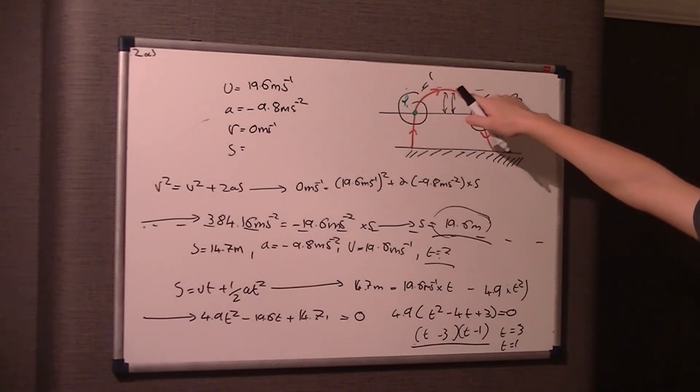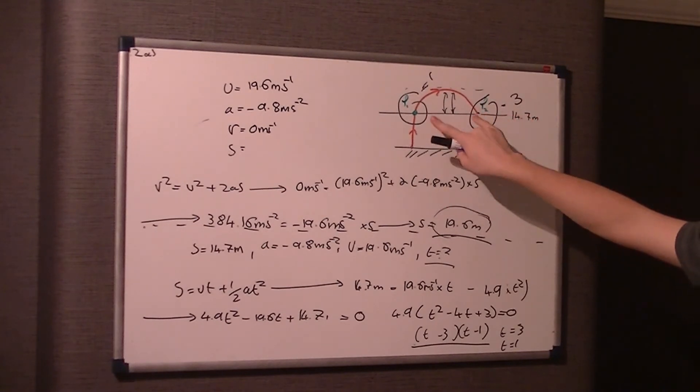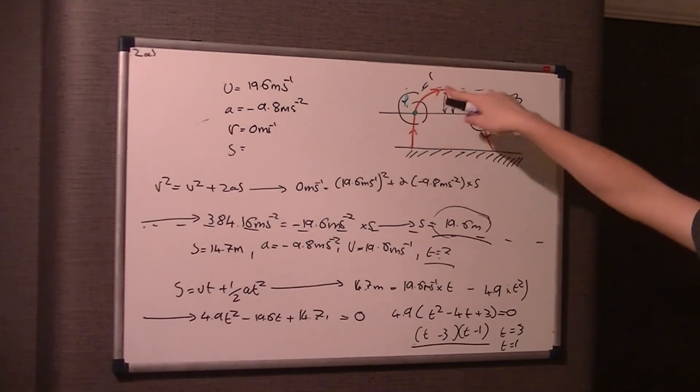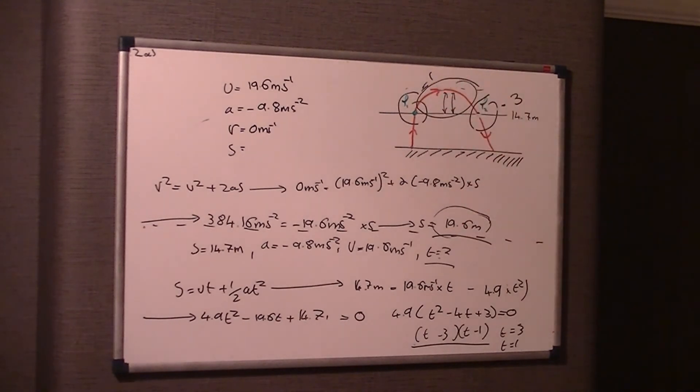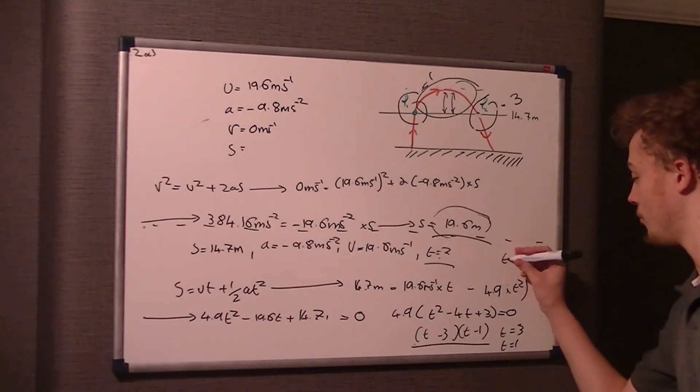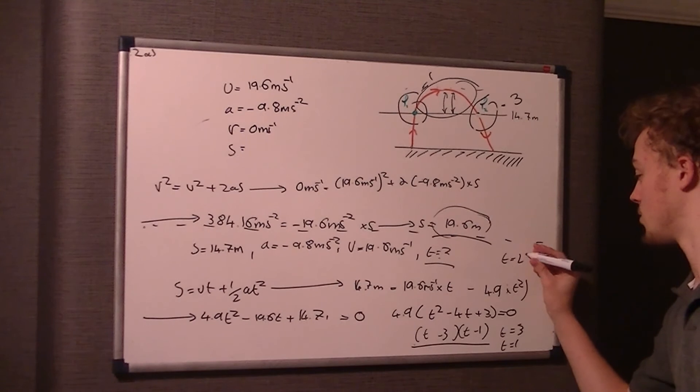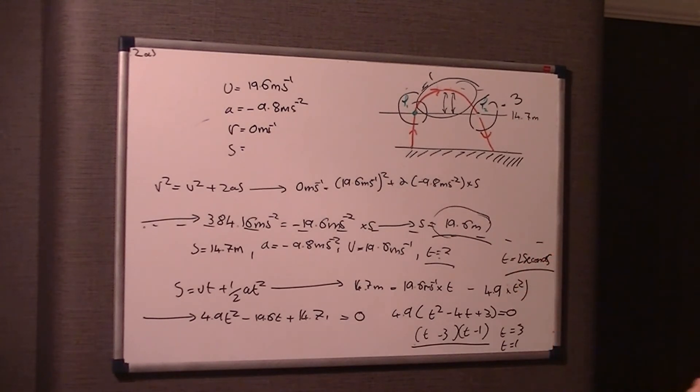Now that's the time at each period when it passes. So when it passes through here, it's at 1 second, increasing, and then when it gets here, it's at 3 seconds. So obviously the distance between them two is the time difference between 1 and 3 seconds, which is 2 seconds. So therefore this whole bit here is 2 seconds. Therefore the stone is above 14.7 meters for 2 seconds.